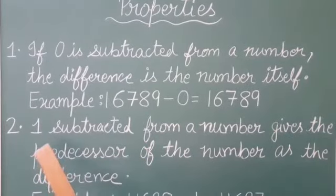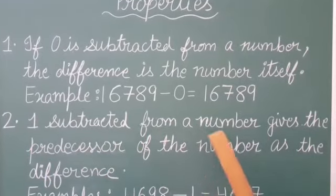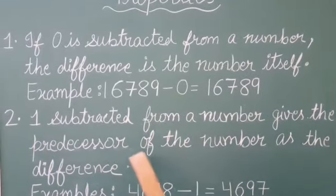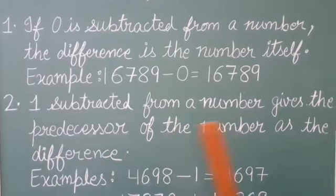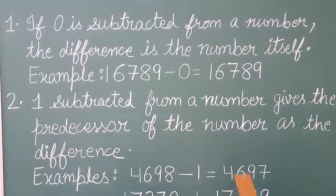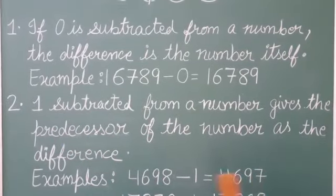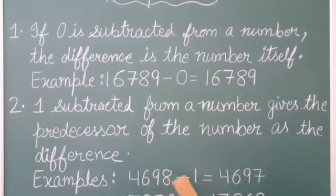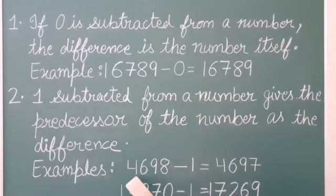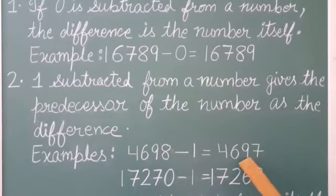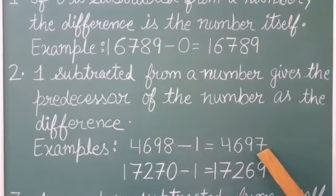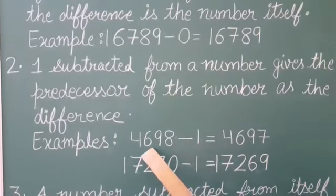Second property: one subtracted from a number gives the predecessor of the number as the difference. This means when we subtract 1 from a given number, we get the predecessor of that number. For example, when we subtract 1 from 4,698, we get 4,697. This is the predecessor of this number.